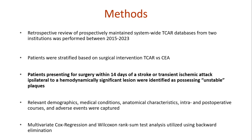We used SVS criteria — patients presenting for surgery within 14 days of a stroke or TIA, with TIA defined as unilateral weakness or symptom change or amaurosis fugax, no syncope, ipsilateral to a hemodynamically significant lesion — identified as an 'unstable plaque.' Relevant demographics, medical conditions, anatomic characteristics, perioperative courses, and adverse events were captured for analysis, and standard multivariate Cox regression with Wilcoxon rank-sum test was performed.